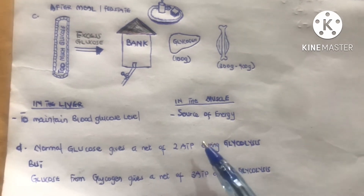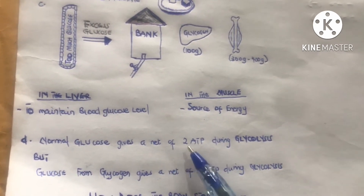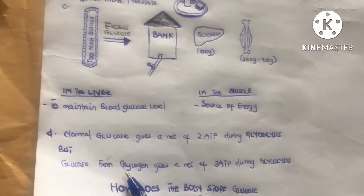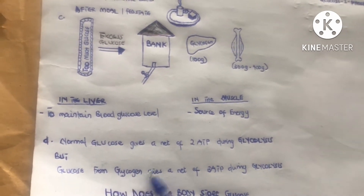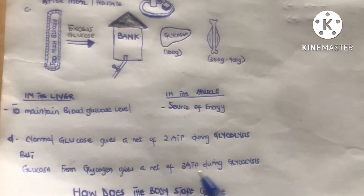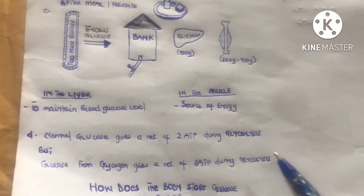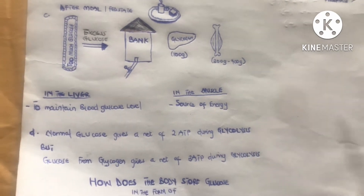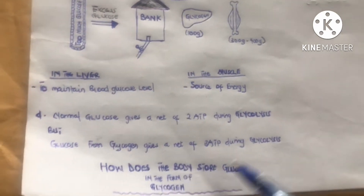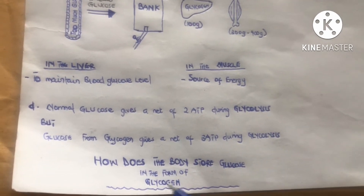One important fact: normal free glucose gives a net of 2 ATP during glycolysis, but glucose derived from glycogen gives a net of 3 ATP during glycolysis.